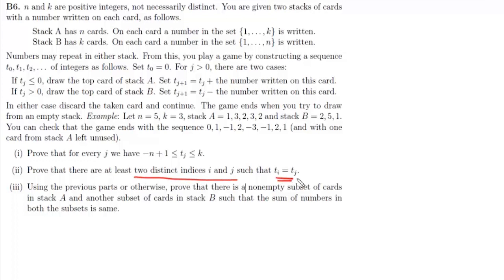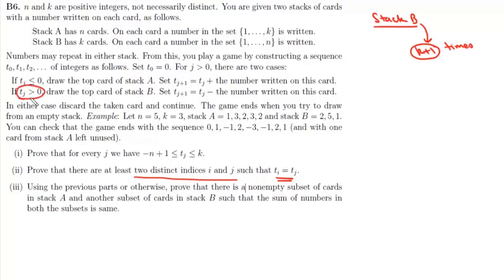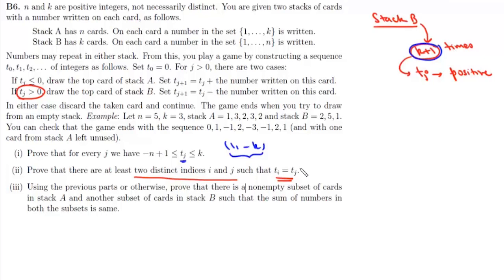The second part asks us to prove there are at least two distinct indices i and j such that T_i equals T_j. We consider two cases. Case 1: suppose the game ends when we try to draw from stack B, meaning we have drawn all k cards from stack B. Since stack B has k cards, we must try to draw at least k+1 times, and we draw from stack B only when T_j is positive. So for each of these k+1 instances, T_j is positive. From part one, T_j lies between -(n-1) and k, so positive values range from 1 to k — only k distinct values. With k+1 positive values among only k possibilities, at least one value is repeated, giving two distinct indices i and j with T_i equals T_j.